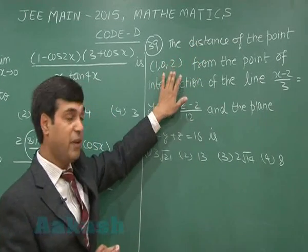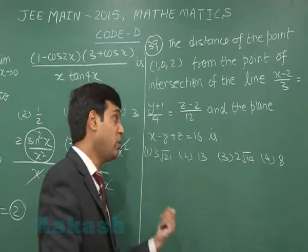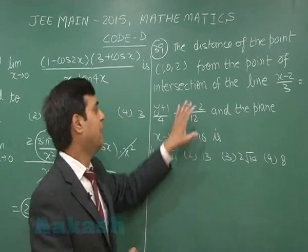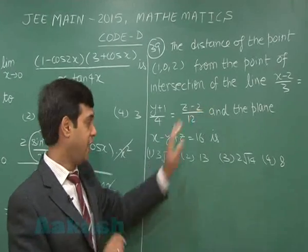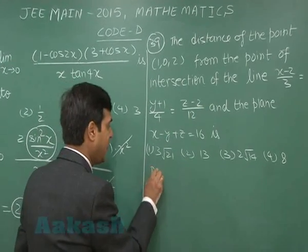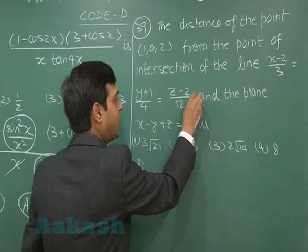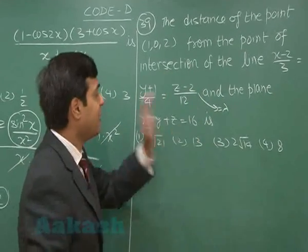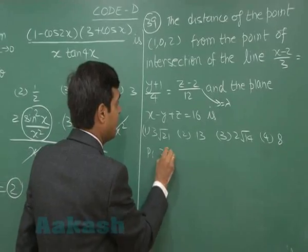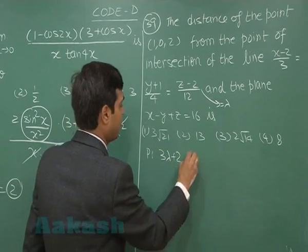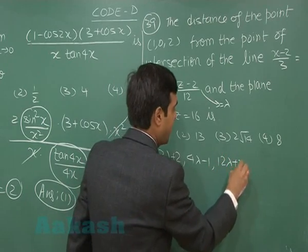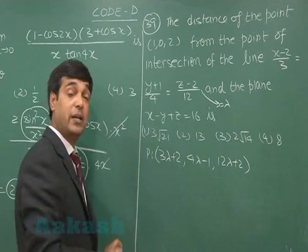So, distance of a given point from the point of intersection of the line and plane. We can start by assuming let there be a point on the line, say P. We can consider this term as lambda. When we take it as lambda, we get 3 lambda plus 2, 4 lambda minus 1, 12 lambda plus 2 as a general point on this line.